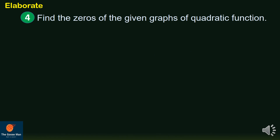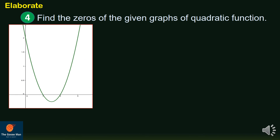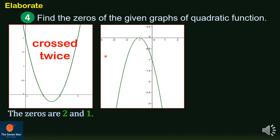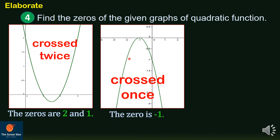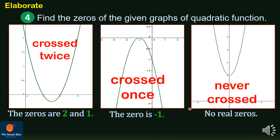For example 4, find the zeros of the given graphs of quadratic functions. In the first graph, the zeros are at x equals 1 and x equals 2, meaning the parabola crosses the x-axis twice. In the second graph, the parabola crosses the x-axis once, with the zero at x equals negative 1. In the third graph, the parabola never crosses the x-axis, so there are no real zeros.